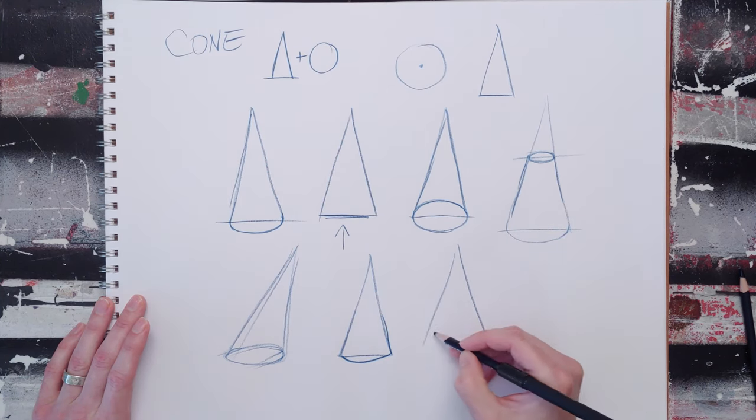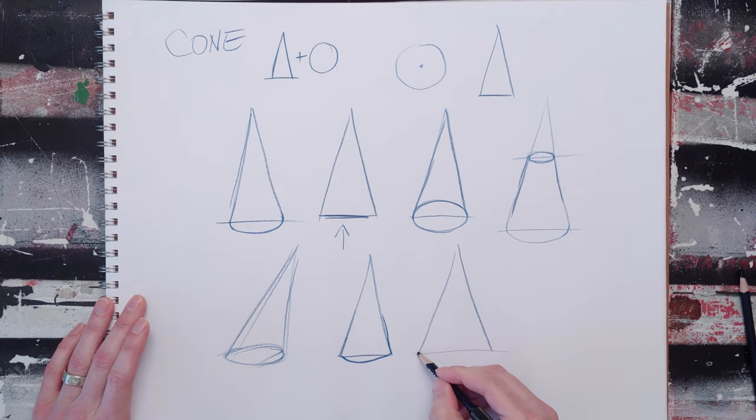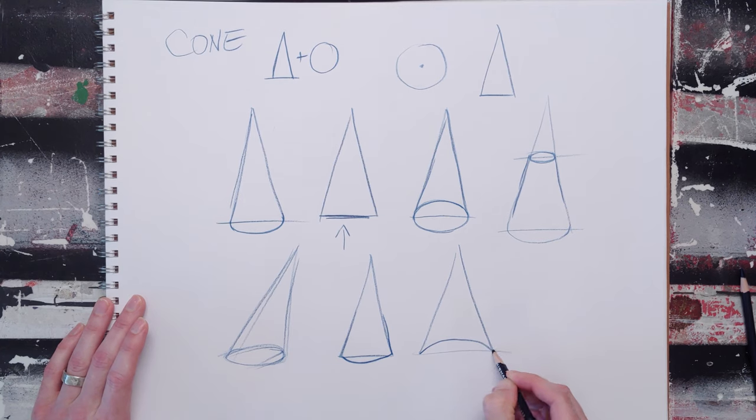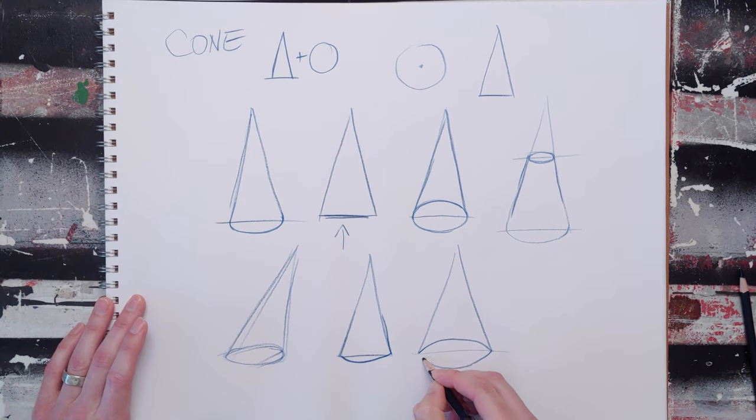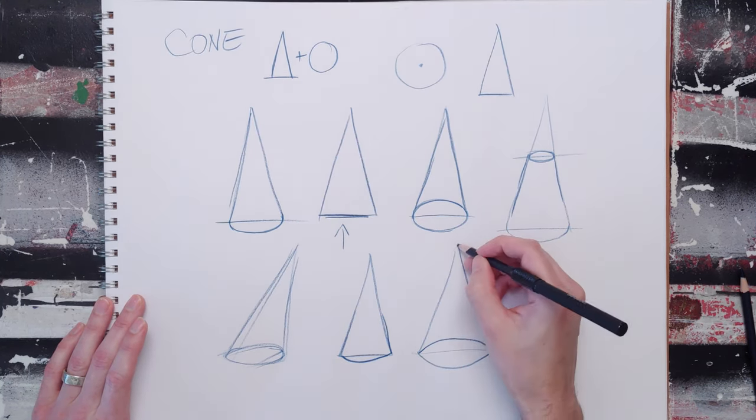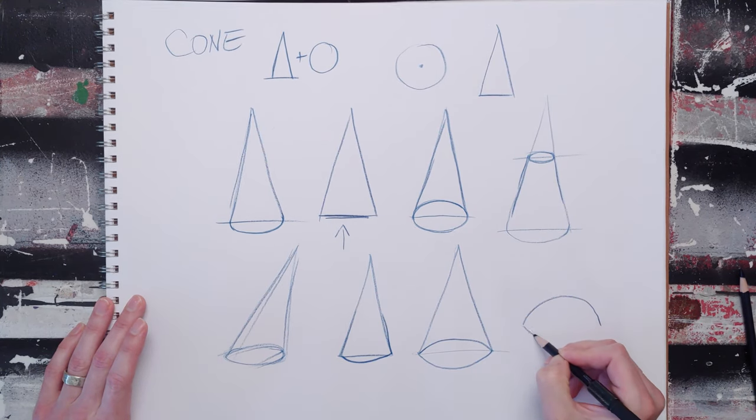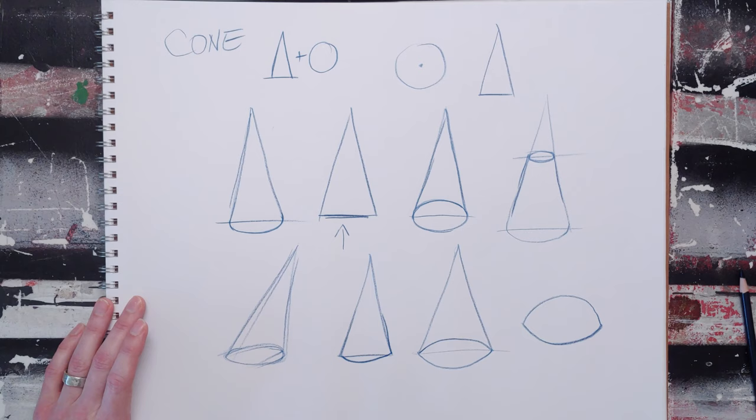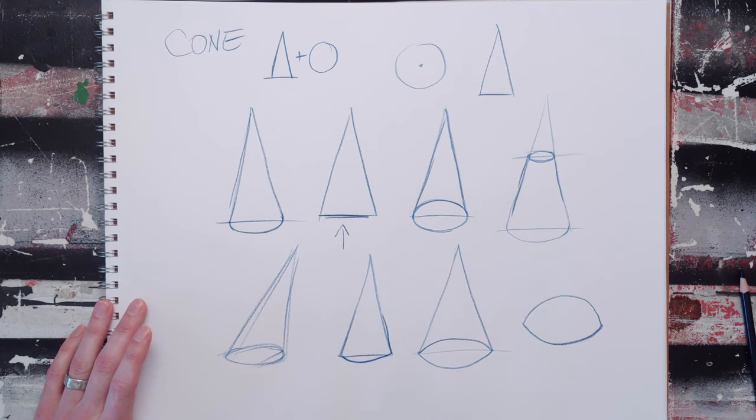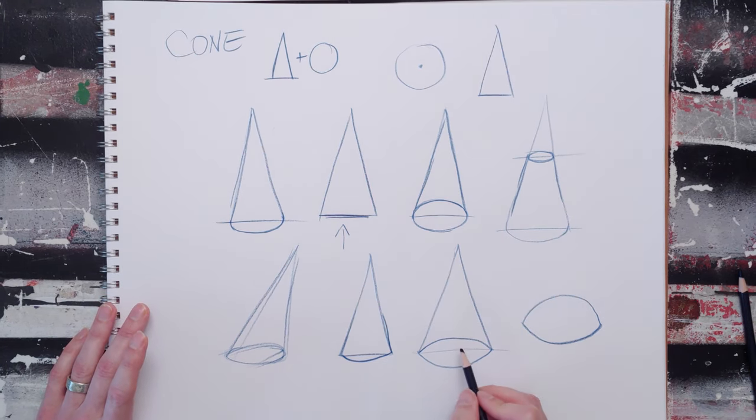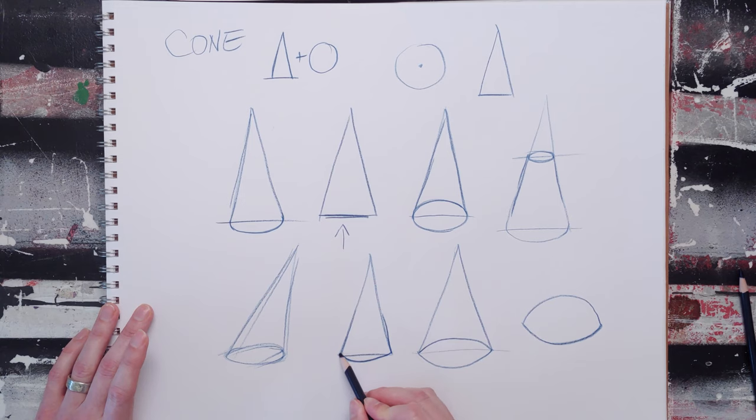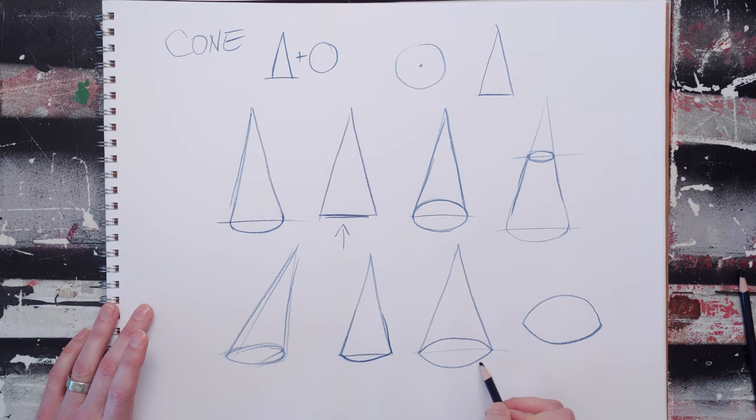So if your cone goes point, arc, point, point, arc, point, then essentially what I'm saying is if I look down on this cone, its actual shape from above is this sort of thing, just like a cylinder. And this is the kind of main mistake that you can potentially make. This will create dimension, it'll just look a little bit funky.